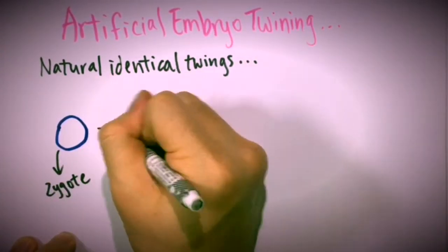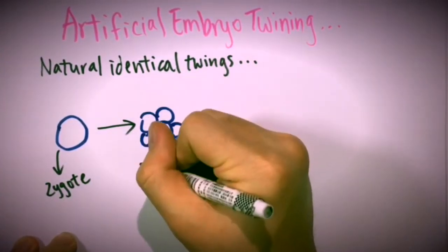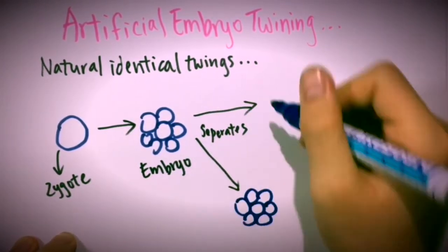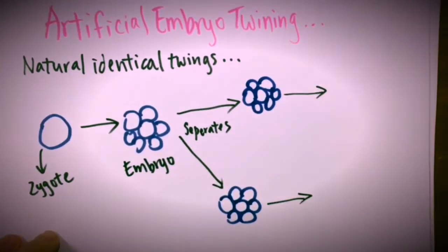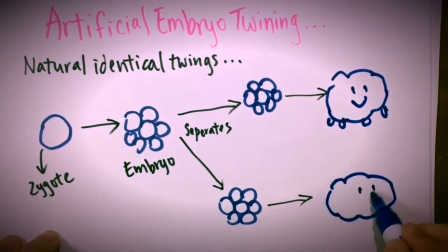A sperm fertilizes an egg and produces a zygote. The zygote then grows into an embryo. The embryo separates naturally and each embryo develops into identical twins.